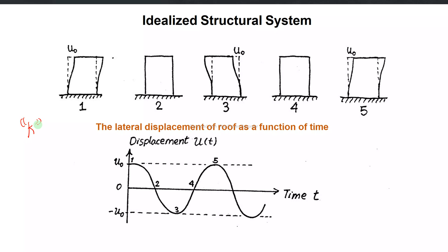If you recall, with stiffness k we have a restoring force f. The restoring force f is equal to negative k times x. If you recall from the dynamics of rigid bodies, this restoring force equals negative kx. We usually see this with a spring.